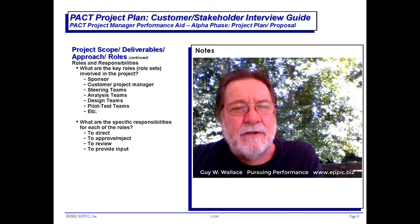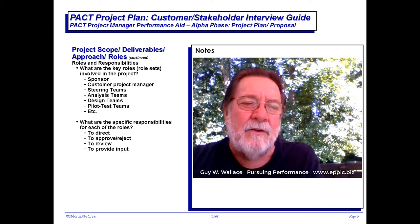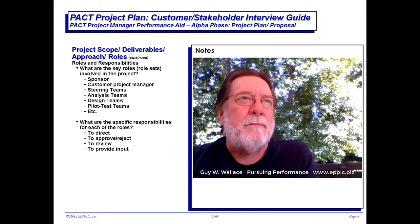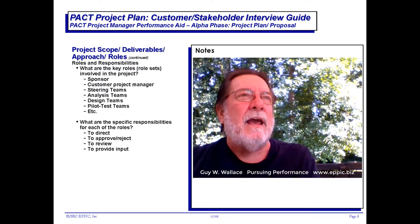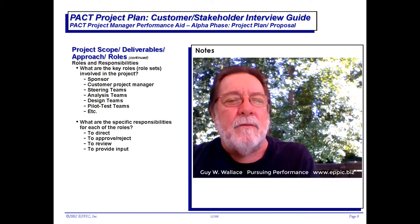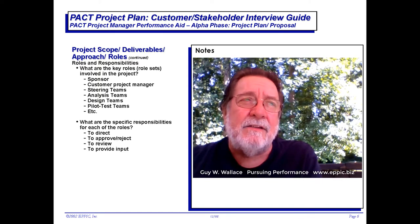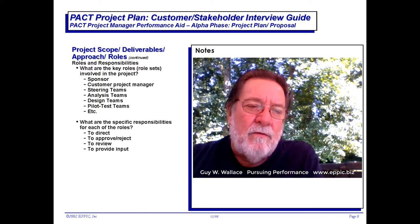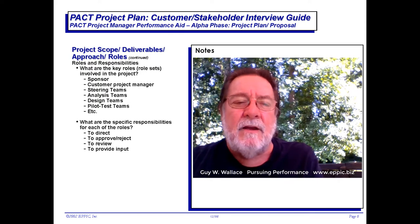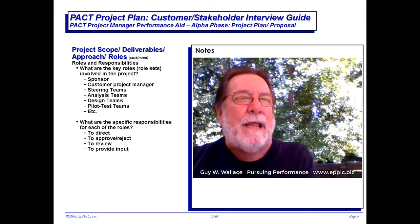The next page covers project scope, deliverables, approach, and roles. Now we can ask: who are the sponsors? Who will be the project manager? Who might be on a project steering team, or on analysis and design teams if we're taking a team approach? Or has that been excluded, and we're going to meet with master performers and subject matter experts one-on-one individually? We need to understand that. Who is going to be directing, approving, rejecting? Who is going to review, and who is going to provide input?